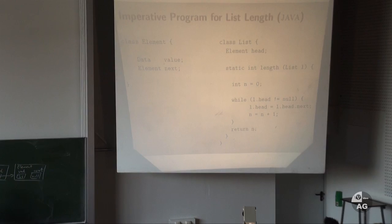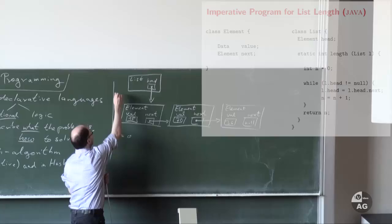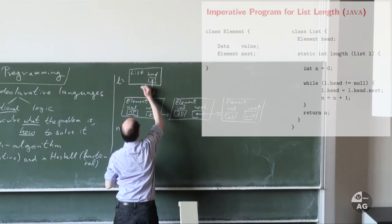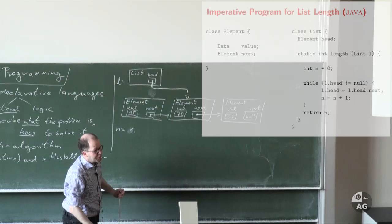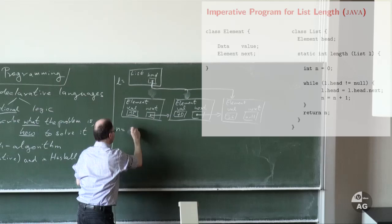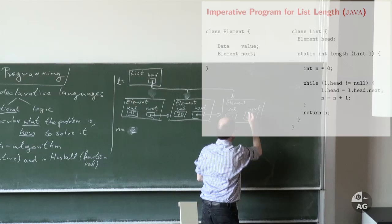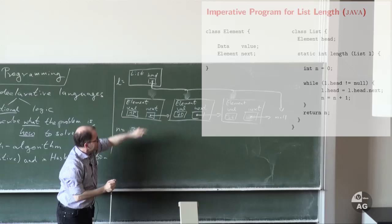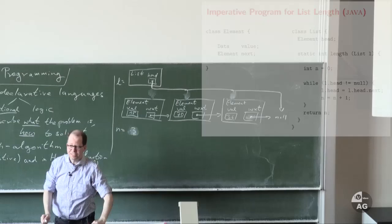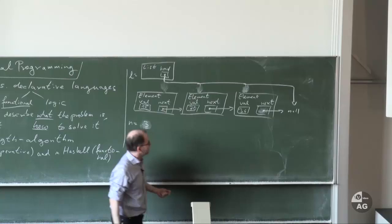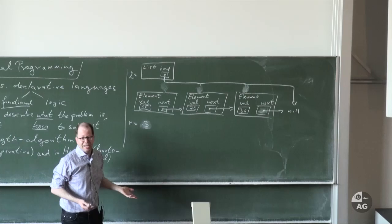Let's see what happens. In the beginning n is 0 and l.head points to the first element. It's not null, so we run through the while loop, move the pointer to the next element, and increase n by one. We repeat this: move to 70, increase n; move to 36, increase n. Now l.head is null, so the result is 3. The length was correct, but as was pointed out, l.head is now null — the list is lost. This is most likely a programming bug, as it's very unlikely the programmer intended this.